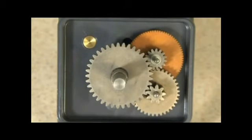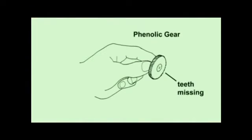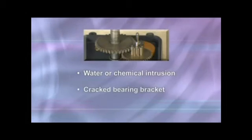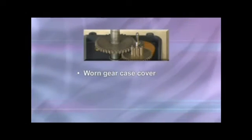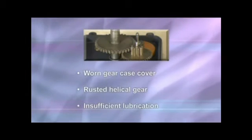Generally, gear failure can be caused by misalignment mainly due to the wear over the service life of the pump. The following conditions of the parts can contribute to the phenolic gear stripping: water or chemical intrusion, cracked bearing bracket, worn gear post, worn gear case cover, worn gear, rusted helical gear, and insufficient lubrication.